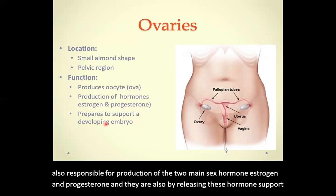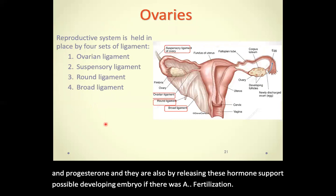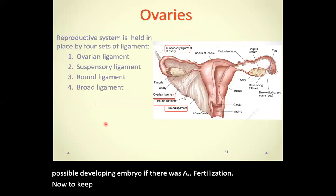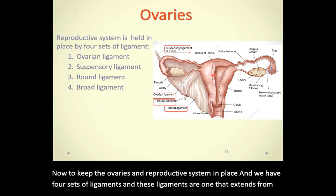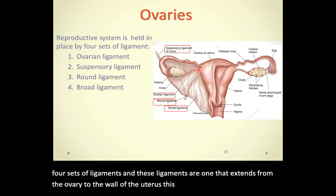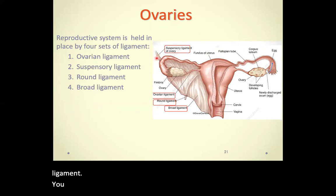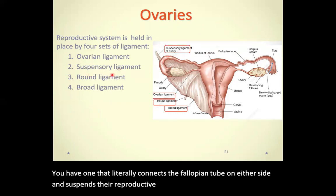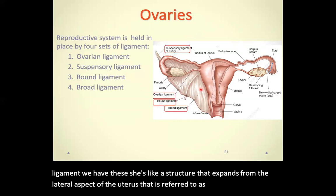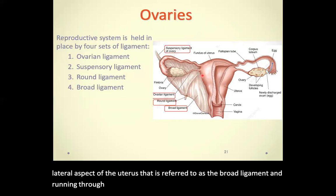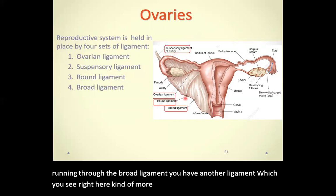To keep the ovaries and reproductive system in place, we have four sets of ligaments. One extends from the ovary to the wall of the uterus, referred to as the ovarian ligament. One connects the fallopian tube on either side and suspends the reproductive organs, known as the suspensory ligament. There is a sheath-like structure from the lateral aspect of the uterus called the broad ligament, and running through it is the round ligament.